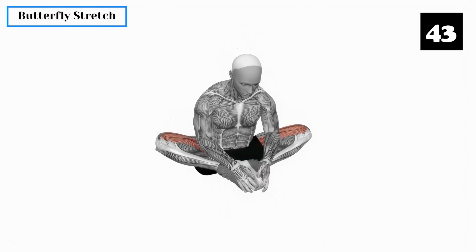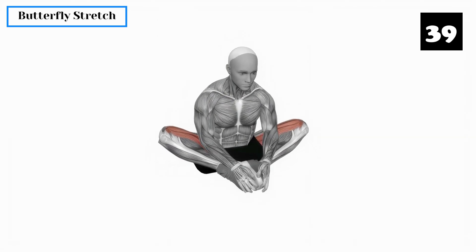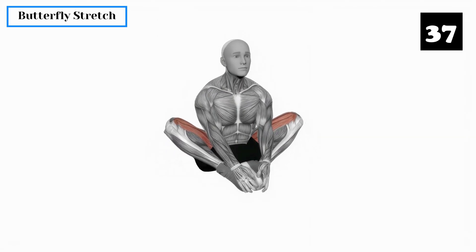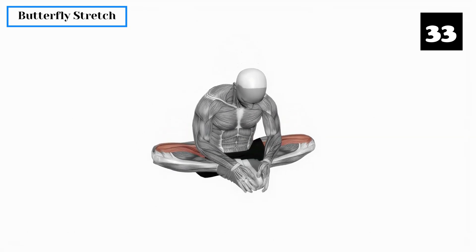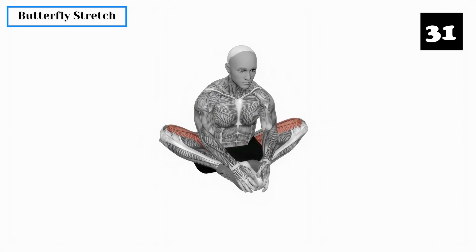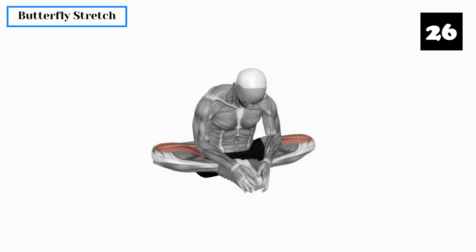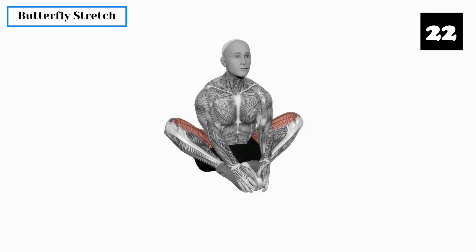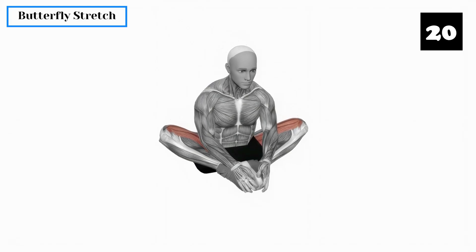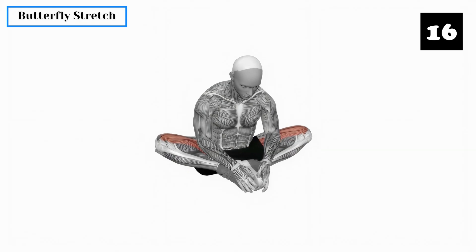Exercise 1: Butterfly Stretch. The butterfly stretch targets the pelvic floor muscles and inner thighs. Sit on the floor, bend your knees and bring the soles of your feet together. Gently push your knees towards the ground using your elbows, feeling a stretch in the inner thighs. Hold this position for 30 seconds and repeat it 3 times. This exercise helps increase blood flow to the groin area.